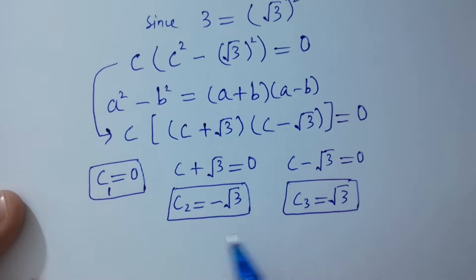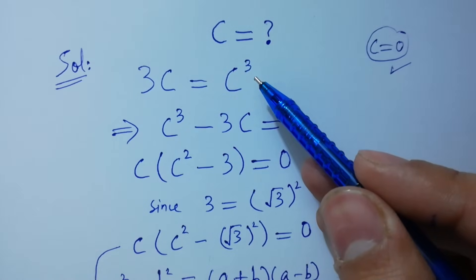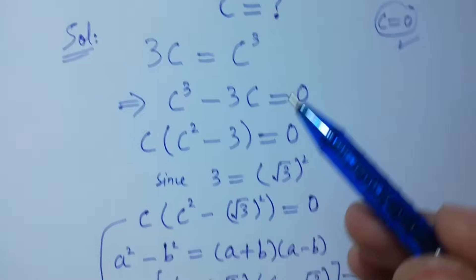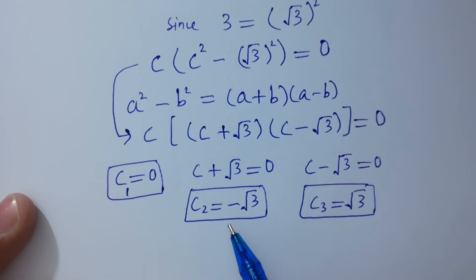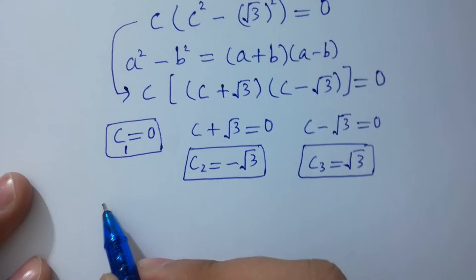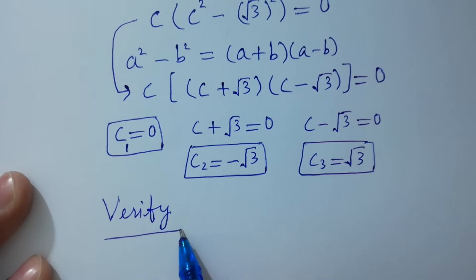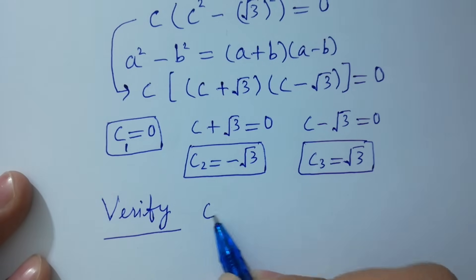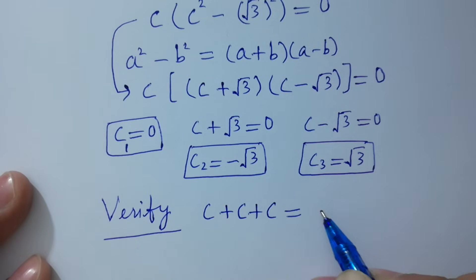So I was right — since we had power 3, there are three solutions: c₁ equal to 0, c₂ equal to minus √3, and c₃ equal to plus √3. Now I am going to verify c plus c plus c equal to c times c times c for each solution.